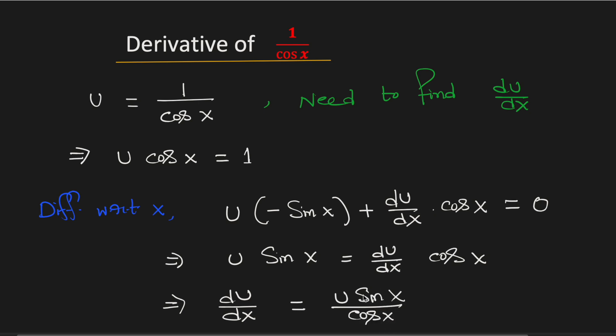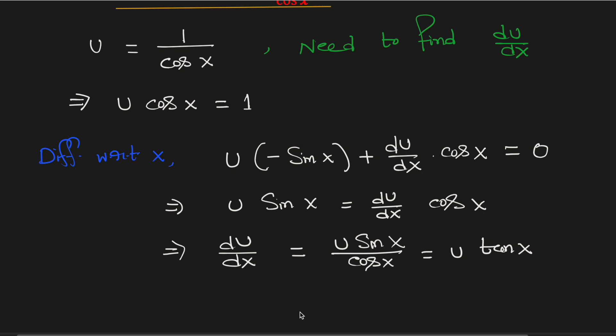Now we know that sine x divided by cosine x is tan x. As u is equal to 1 over cosine x. This is now equal to 1 over cosine x times tan x.